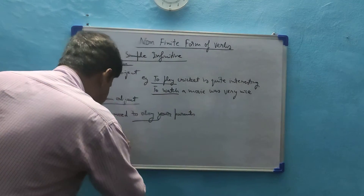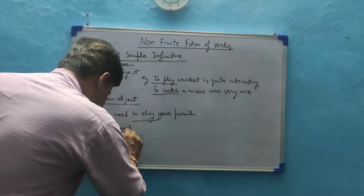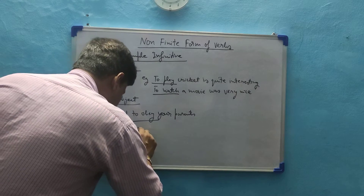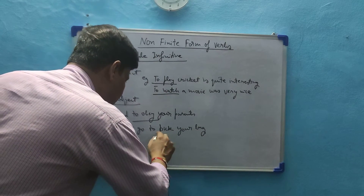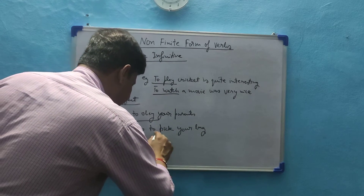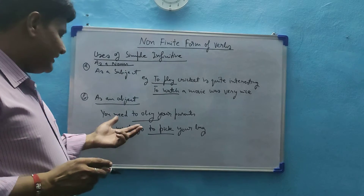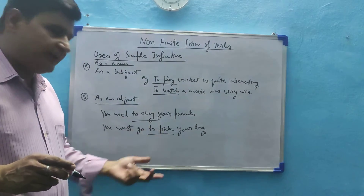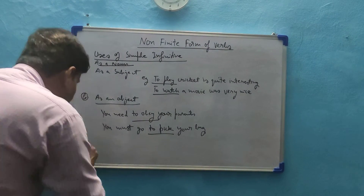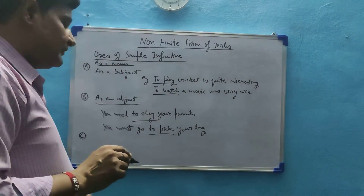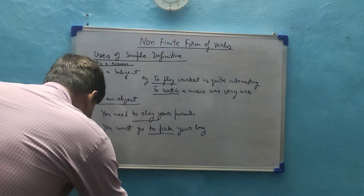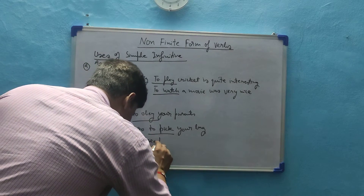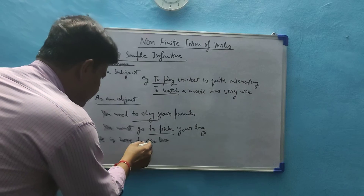Quick revision: there are two categories of infinitives — simple infinitive and gerundial infinitive. Both are used with 'to' and without 'to'. Infinitives used without 'to' are called bare infinitives. The verbs that take bare infinitives are: see, hear, watch, let, bid, need, help, dare, etc. It is to be noted that need and dare take bare infinitives only in negative sentences.